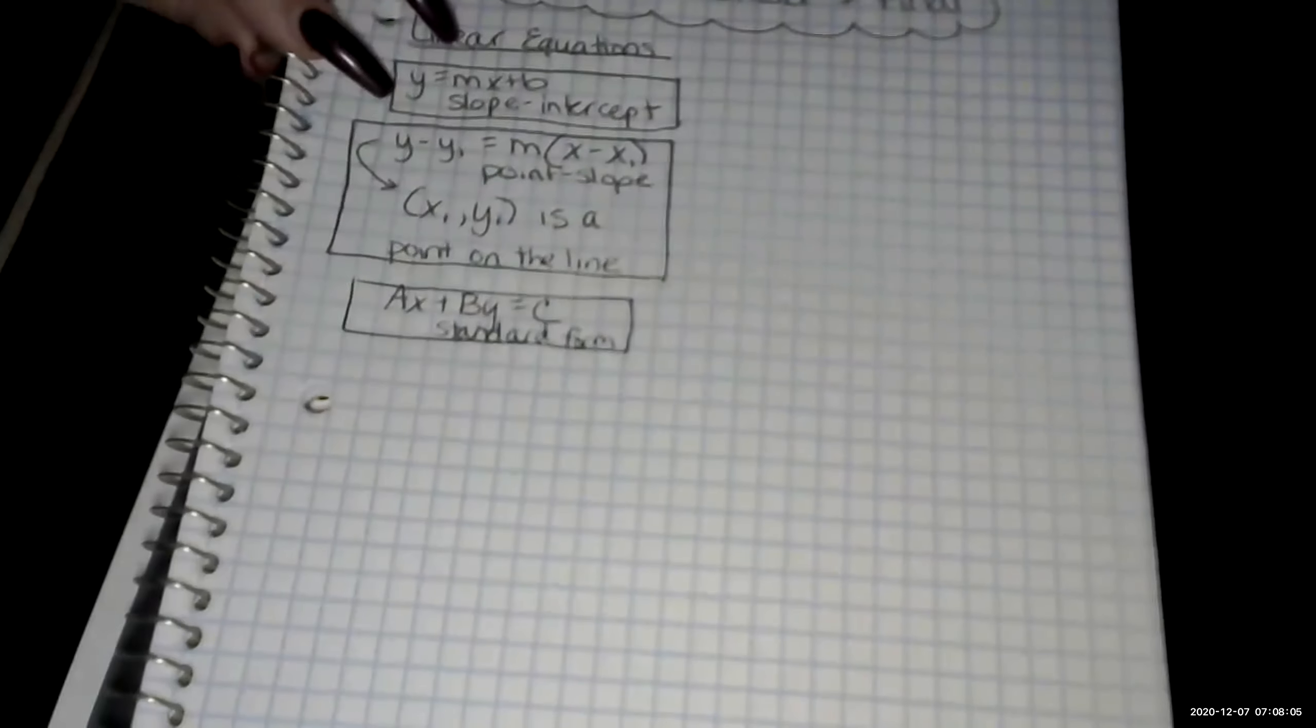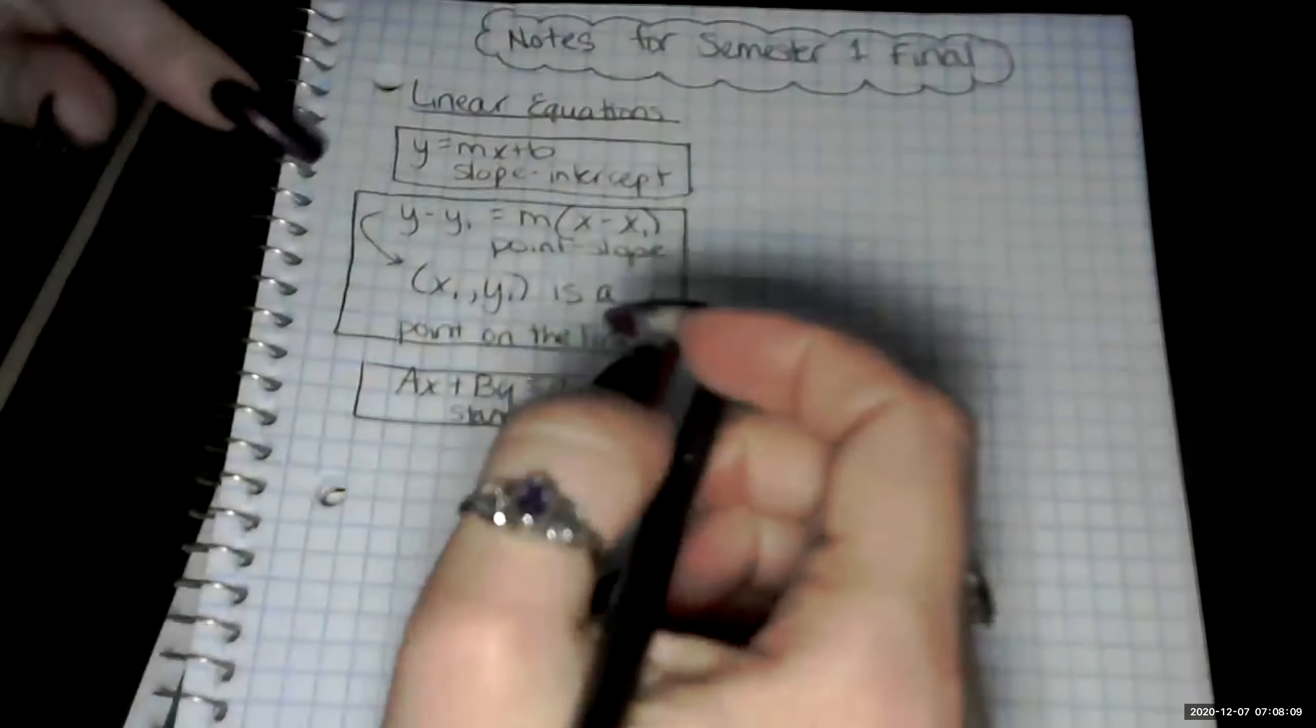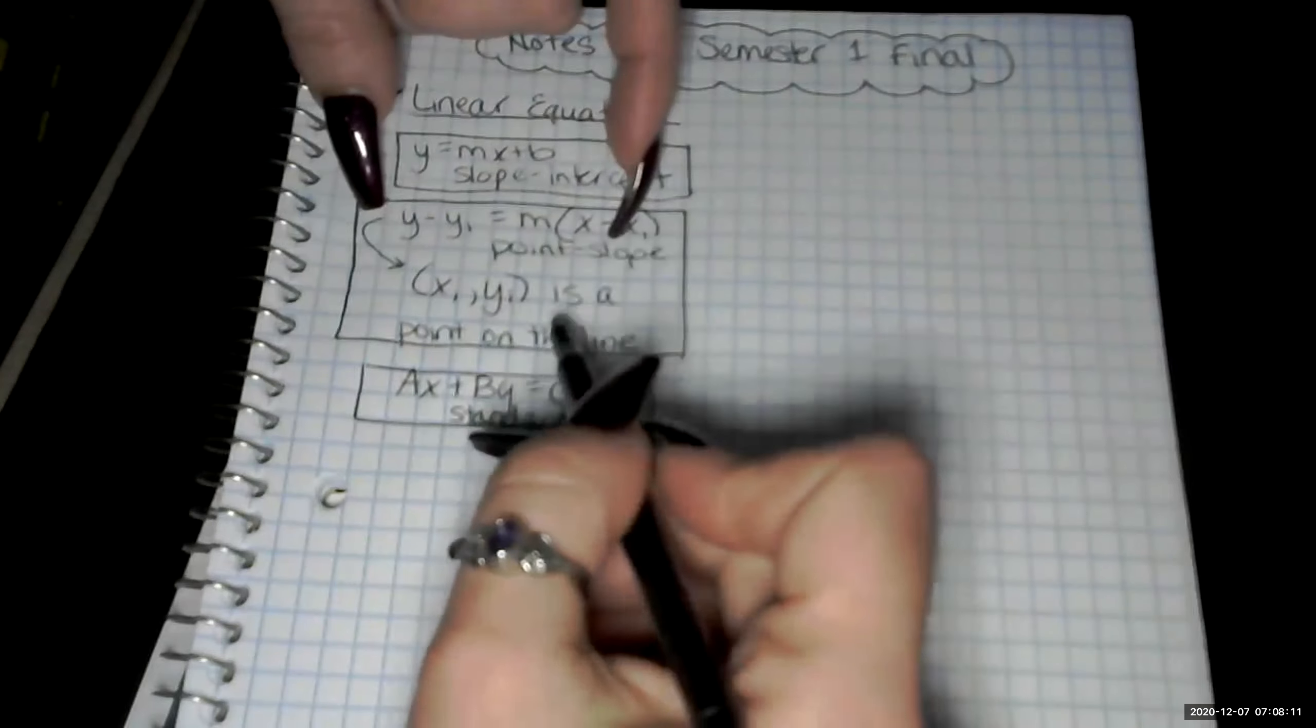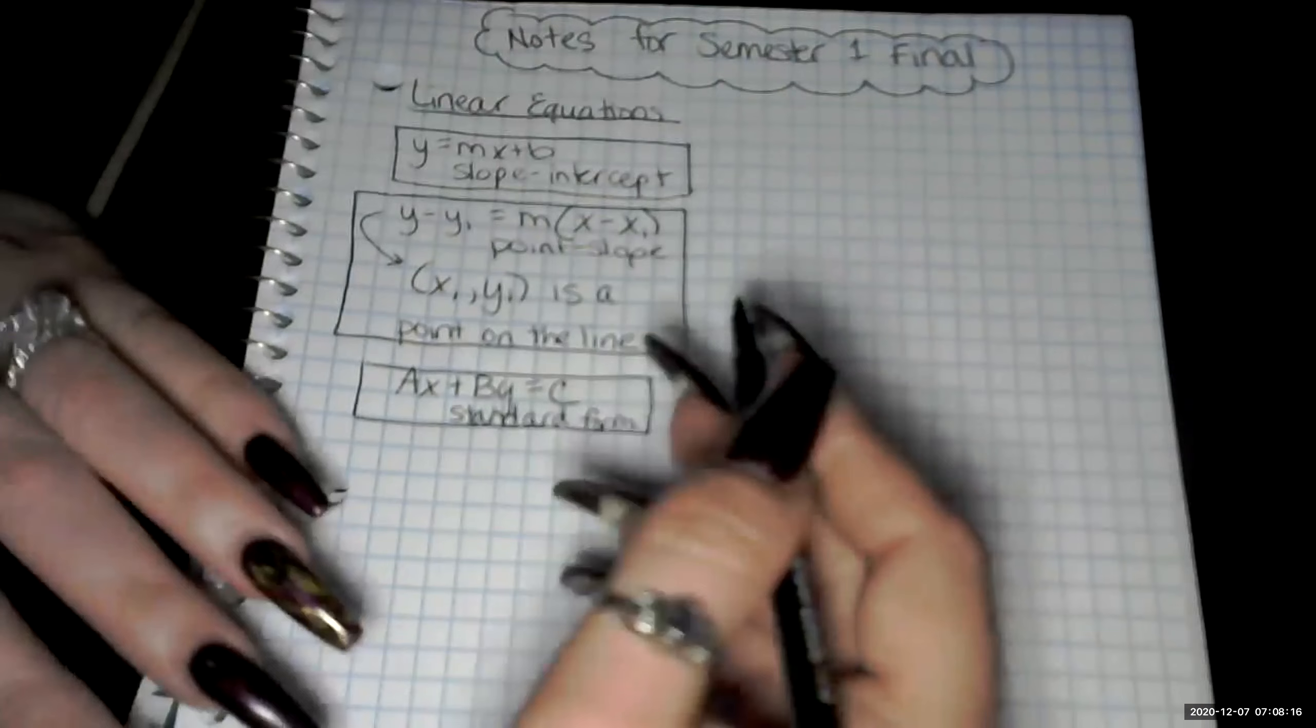Now, remember with point slope, you're identifying a point. If you have the point and the slope, you can write it in point slope.